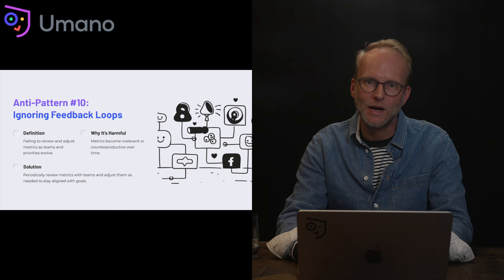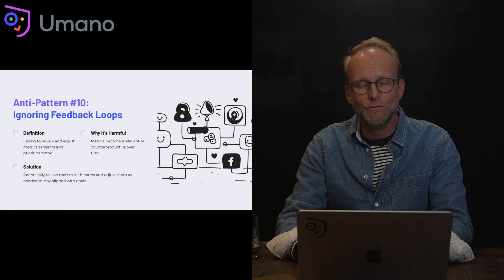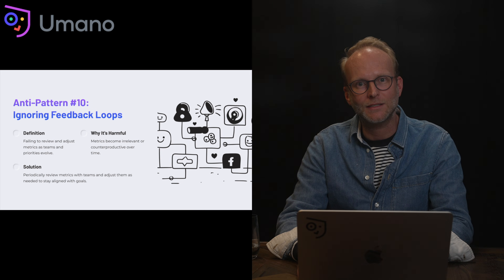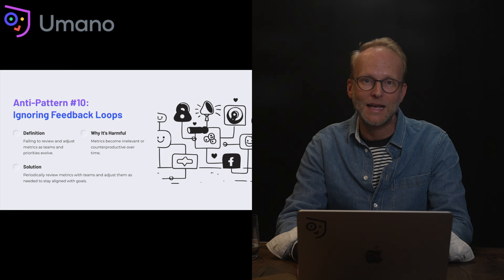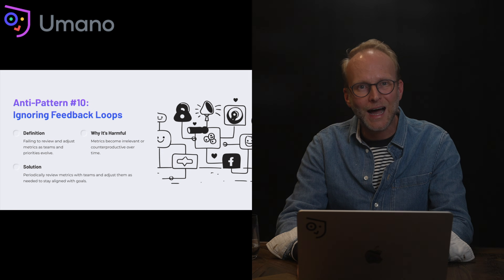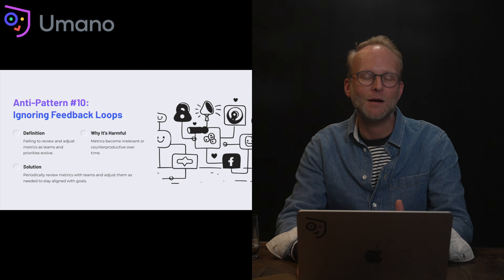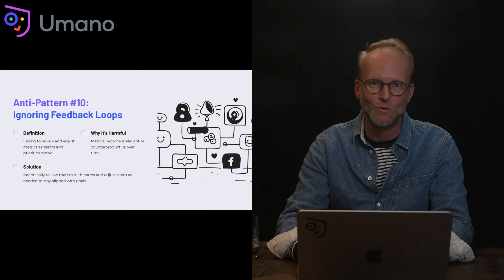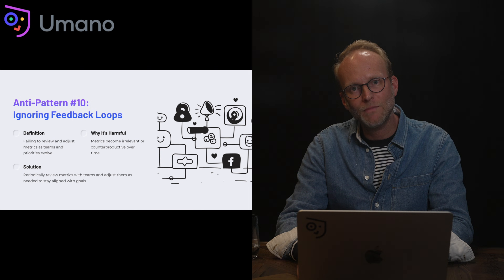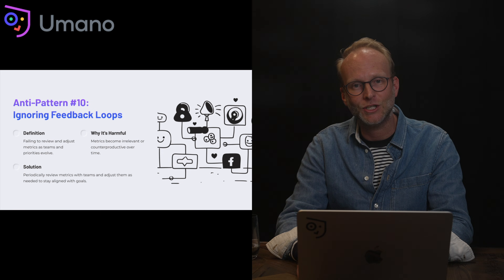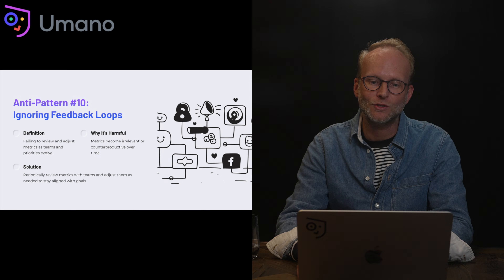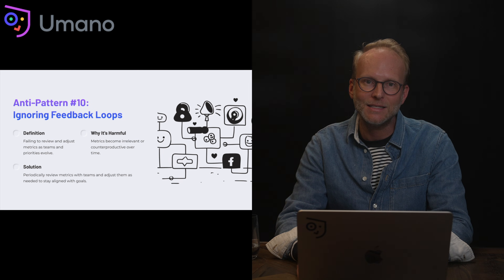Anti-pattern ten: ignoring feedback loops. Here you're ignoring the principle of iteration and failing to review and adjust the metrics you focus on based on the improvements and outcomes you achieve. This is harmful because metrics can become irrelevant or counterproductive to your team's way of working. The solution is to ensure you're tracking whether you're hitting your target metric and to periodically review metrics with teams so you can adjust them as needed and align them with your evolving goals.